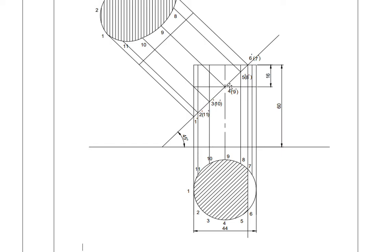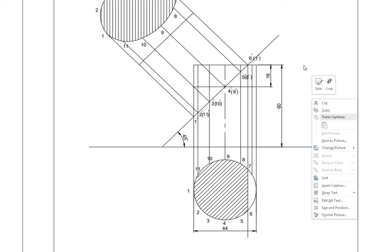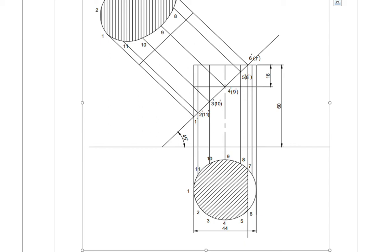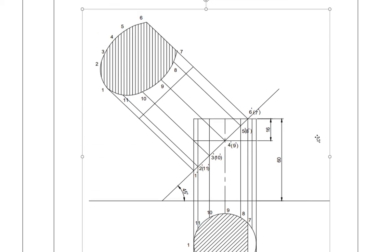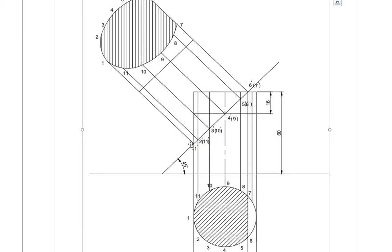This is the sectional top view and this is the front view showing the section plane. Now, to show the true shape, from all these 11 points draw lines perpendicular to the section plane. Through all these points you want to draw lines perpendicular to this line.